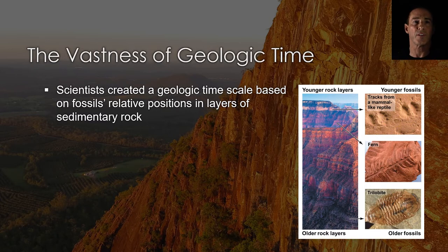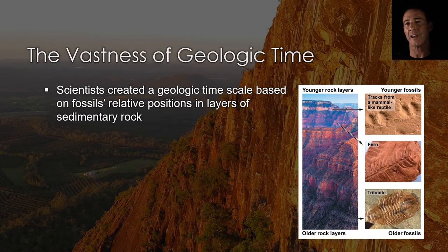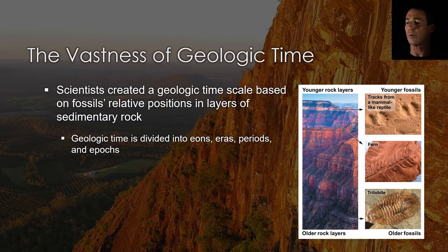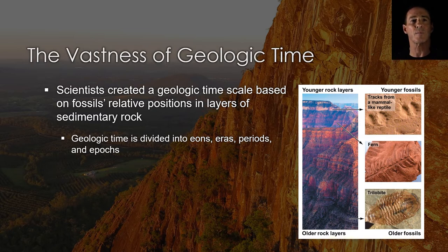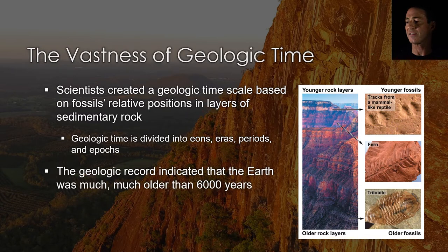Researchers placed fossils in a younger to older sequence based on relative position within layers of sedimentary rock. As scientists observed similarities in rocks and fossils at different sites, they began to create a geologic time scale, a sequence of intervals called eons, eras and periods that represented the major events in earth's history. Vast amounts of time were required to form the thick layers of sedimentary rock because erosion and deposition of sediments are such slow processes. This suggested that the earth was much older than the 6,000 years claimed by proponents of special creation.